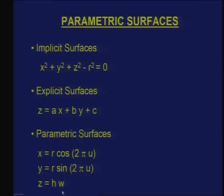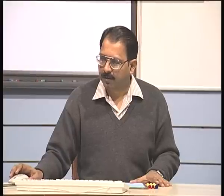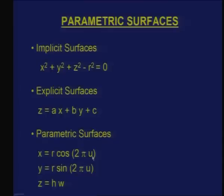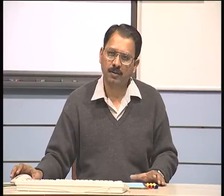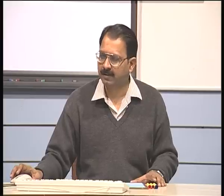If x, y, z are functions of two parameters u and w, you also know what this particular equation represents: a cylindrical surface with the axis along the z-axis and radius r units. Parametric surfaces are also bounded — you give bounds for u and w. If u ranges from 0 to 1, you get one complete circle. If w also ranges from 0 to 1, then the height of the cylinder goes from 0 to h.